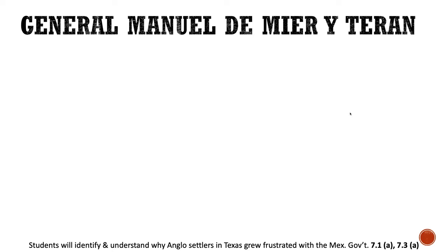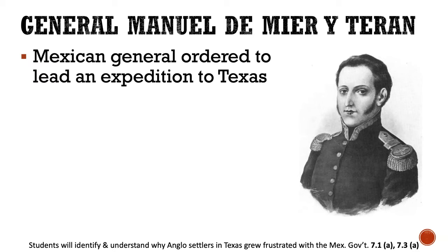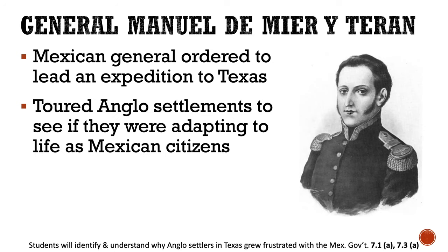This led to the Mier y Terán tour. General Manuel de Mier y Terán was a Mexican general ordered to lead an expedition to Texas after the failed Fredonian Rebellion. The Mexican government wanted to find out what was going on in Texas because it was so far from Mexico City, the capital. Mier y Terán toured Texas and the Anglo settlements to see if settlers were adapting to life as Mexican citizens — speaking Spanish, practicing the Catholic religion, following the laws of Mexico.